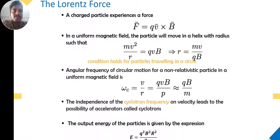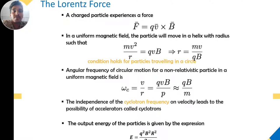The Lorentz force is F = q(v × B), where q is charge and v is velocity. In a uniform magnetic field, the particle will move in a helix with radius r such that mv²/r = qvB, giving r = mv/(qB). The angular frequency of circular motion for a non-relativistic particle in a uniform magnetic field is omega = v/r = qvB/p = qv/m. The independence of cyclotron frequency on velocity leads to the possibility of the cyclotron accelerator.